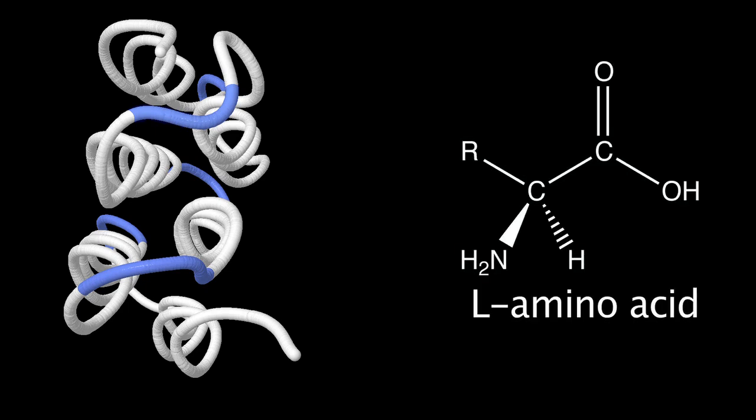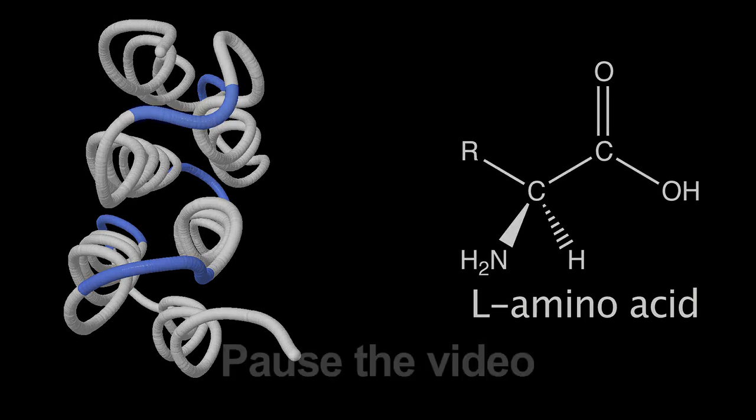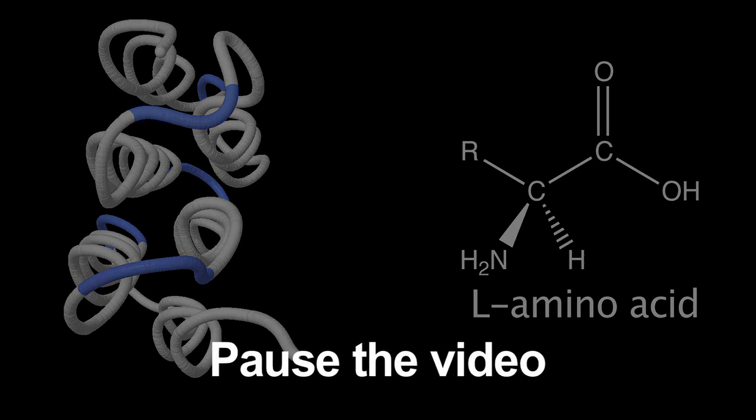As with simple molecules, it is possible for proteins to exist that are mirror images of each other. However, this does not occur in nature. Naturally occurring proteins are composed of L-amino acids only. It is not clear why nature has selected for this particular enantiomer. Pause the video here and discuss with a friend the general structure of amino acids — what are the groups attached to the central carbon, and which, if any, of the amino acids are achiral?